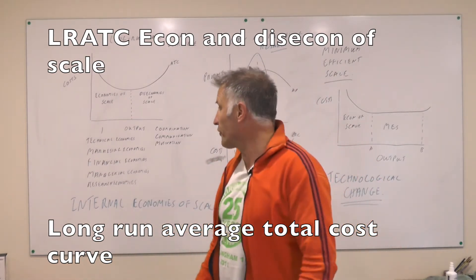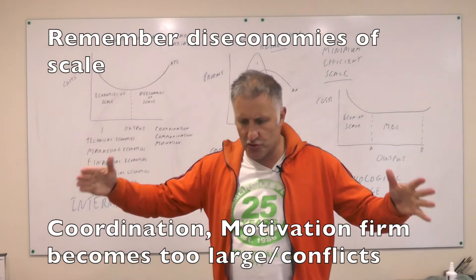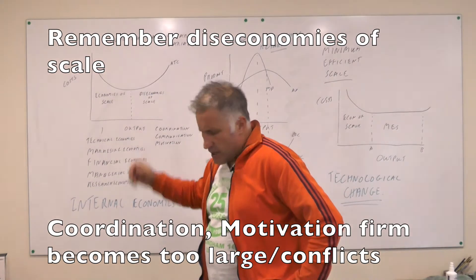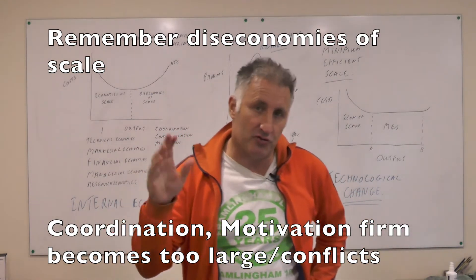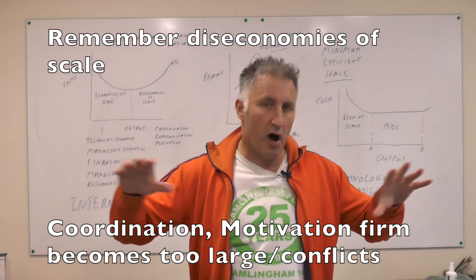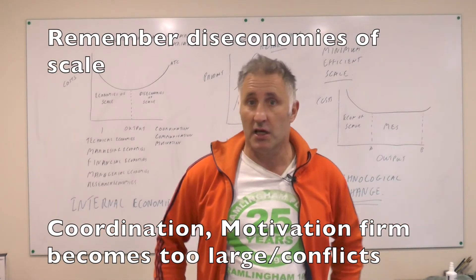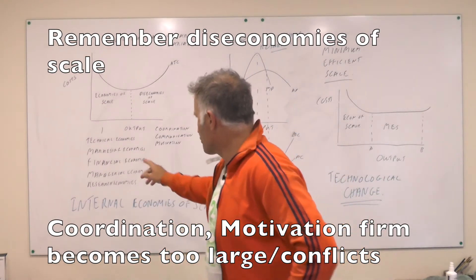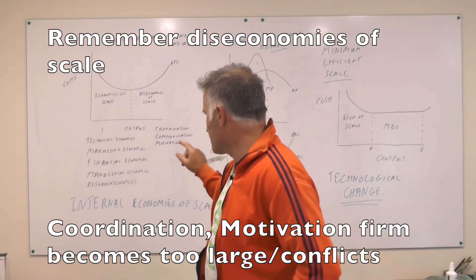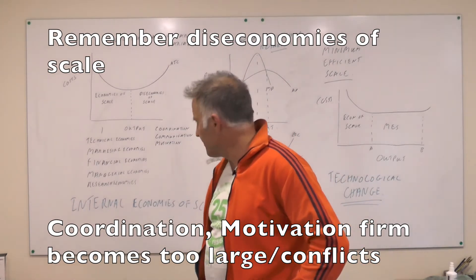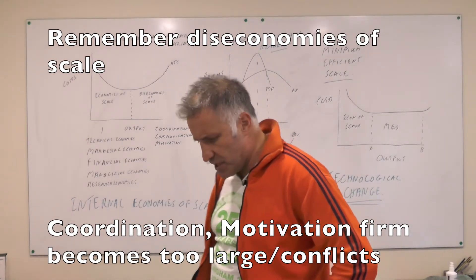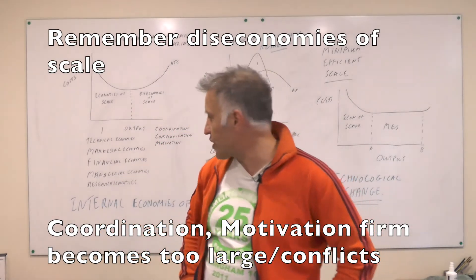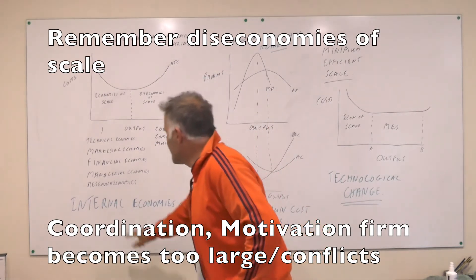So what are economies of scale? There are technical economies — bigger machines mean higher productivity per worker. Marketing economies — you can pay for TV advertising and reach a much wider market, and it's cheaper to buy goods in bulk. Financial economies — it's probably cheaper to borrow money. Managerial economies — managers can specialise in what they do best. And research economies — it's easier for a large firm to undertake research and development. Those are internal to the firm.